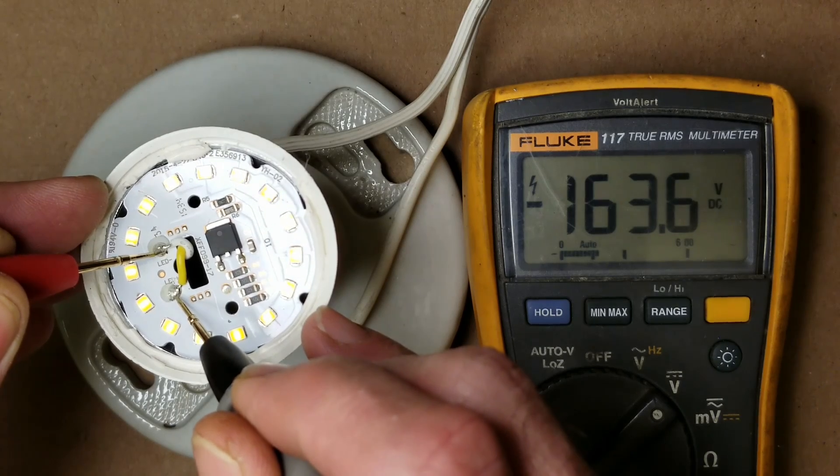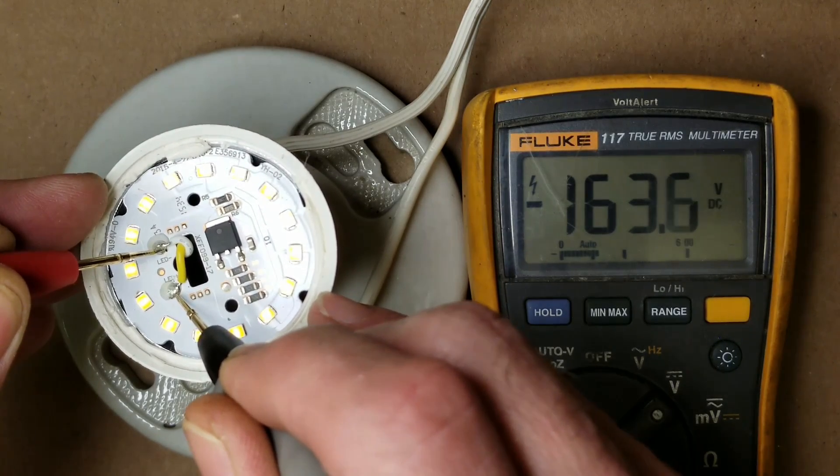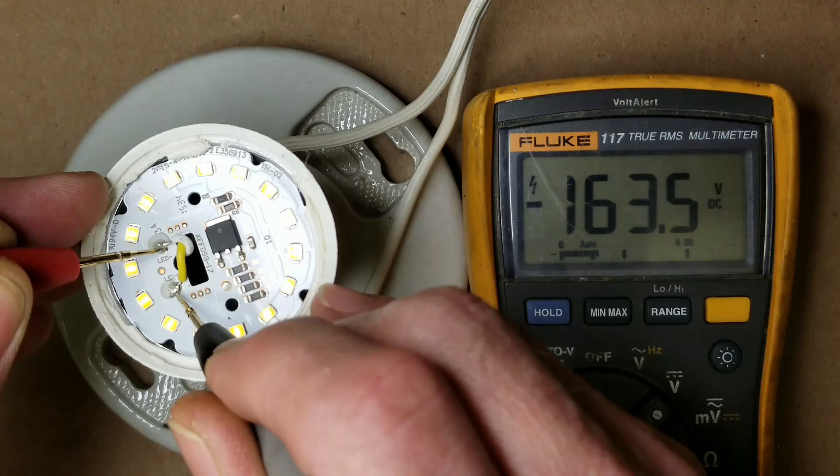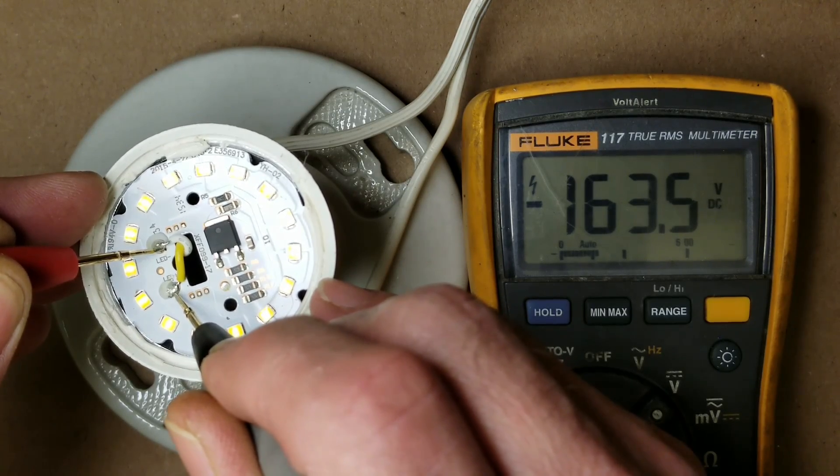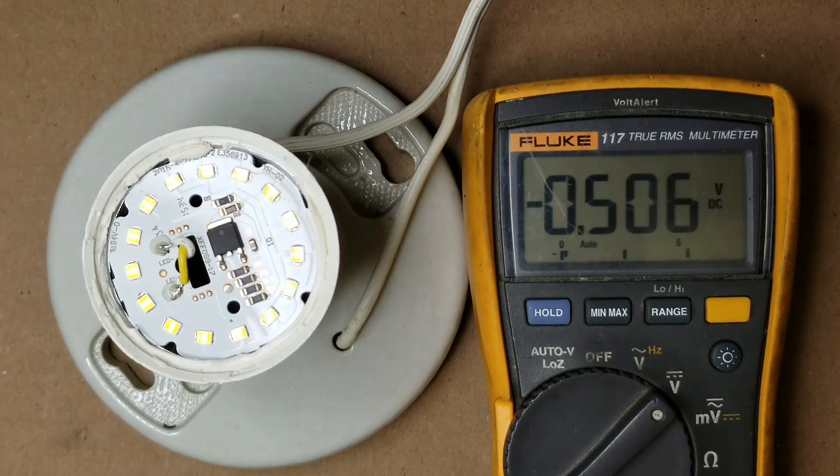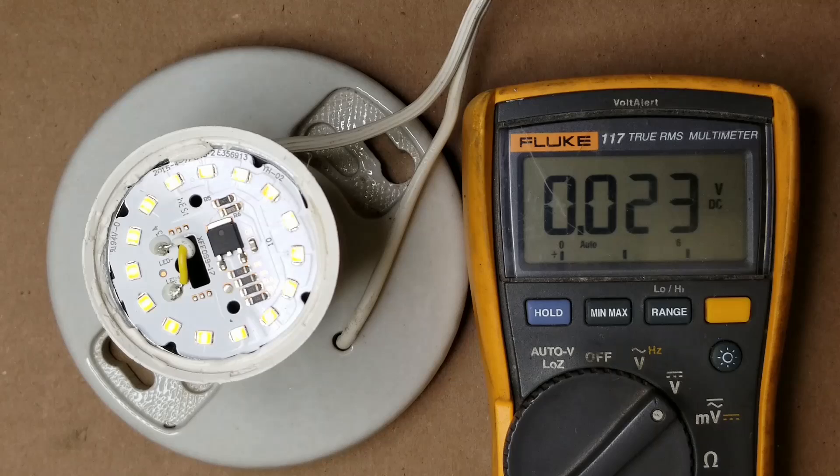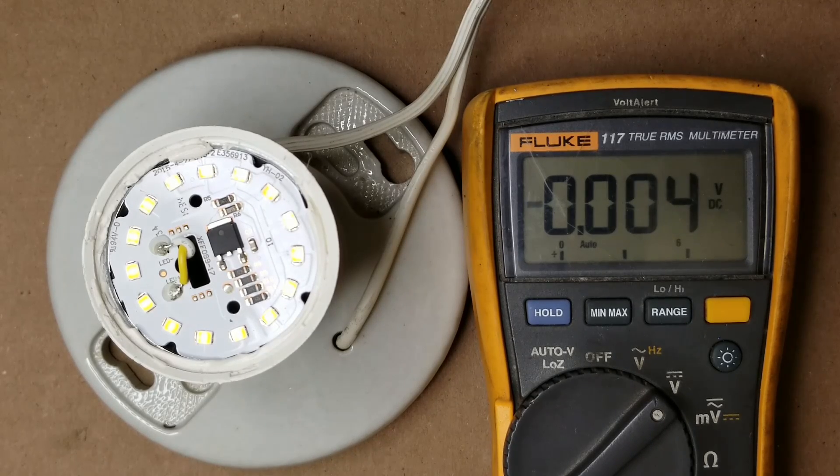And we've got 163 volts, which is almost precisely 120 volts through a full wave bridge rectifier and a filter capacitor. 120 times 1.414 would give us approximately 160 volts. So that's all working great.